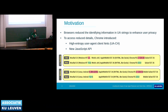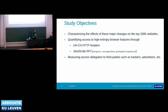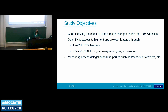This method is a bit problematic because it is accessible by both first parties and third parties without any restrictions. With this empirical study, we wanted to characterize the effect of all of these major changes by Chrome at large scale on top 100k websites using our instrumented web crawler. We quantified the accesses to the high entropy browser features through both user agent client hint headers and the new JavaScript interface. Lastly, we measured access delegation to third parties and investigated whether third parties access those high entropy browser features through HTTP headers or JavaScript APIs, and checked whether those are trackers, advertisers, or fingerprinting scripts.